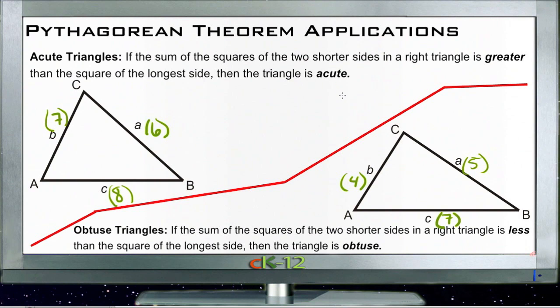But if those numbers don't work out, then we know it's not a right triangle. By identifying what that result actually is, we can see what kind of a not right triangle we have. For instance, let's take a look at this one up here. This triangle on the top left hand side here, abc, is an acute triangle.